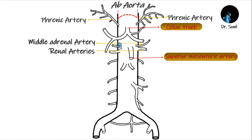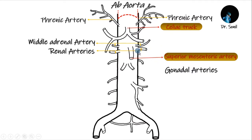The renal arteries are in between L1 and L2, arising just below the superior mesenteric artery. The right renal artery passes deep to the inferior vena cava to the right kidney. The left renal artery passes deep to the left renal vein.